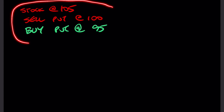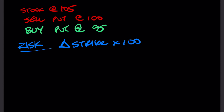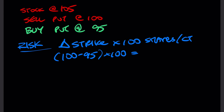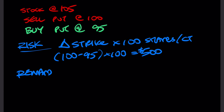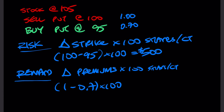Now let's talk about the risk versus reward of this bull put spread. To calculate the risk: it's the differential of the strike prices times 100 shares per contract. In our example, that's $100 minus $95 times 100, which equals $500. To calculate the reward, we need to know the premium prices. Let's say we sold the $100 put for $1.00 and bought the $95 put for $0.70. The reward is the differential of the premiums times 100: $1.00 minus $0.70 times 100 equals $30.